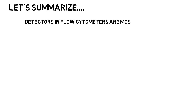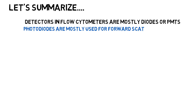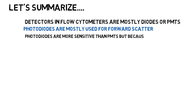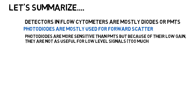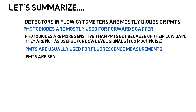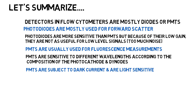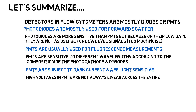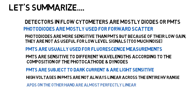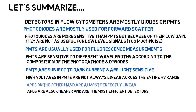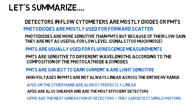To summarize: detectors in flow cytometers are mostly diodes or PMTs. Photodiodes are mostly used for forward scatter but, because of their low gain, are not as useful for low-level signals due to noise. PMTs are usually used for fluorescence measurements and are sensitive to different wavelengths according to the composition of the photocathode and dinodes. PMTs are subject to dark current and are not always linear across the entire range. APDs, on the other hand, are almost perfectly linear, cheaper, and the most efficient detectors. SiPMs are the next generation and can detect single photons.